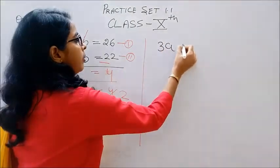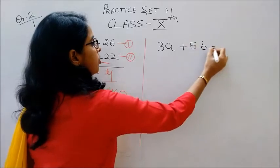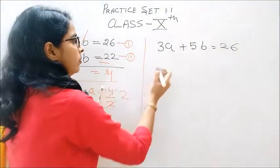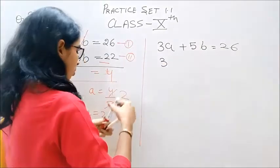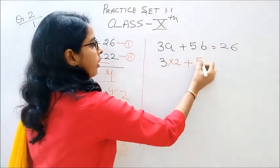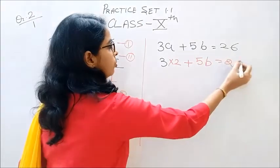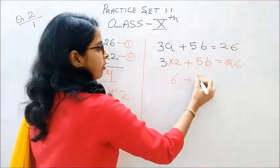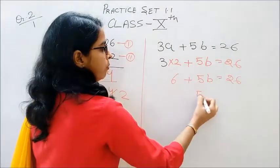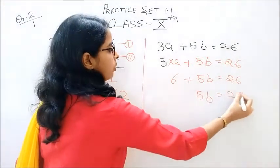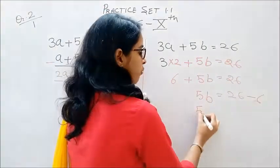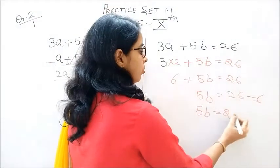3a plus 5b is equal to 26. 3 twos are 6 plus 5b is equal to 26. 5b is equal to 26 minus 6. 5b is equal to 20.